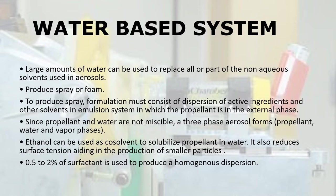Ethanol can be used as a co-solvent to solubilize propellant in water and also reduces surface tension, aiding in the production of smaller particles. 0.5–2% of surfactant is used to produce a homogeneous dispersion.